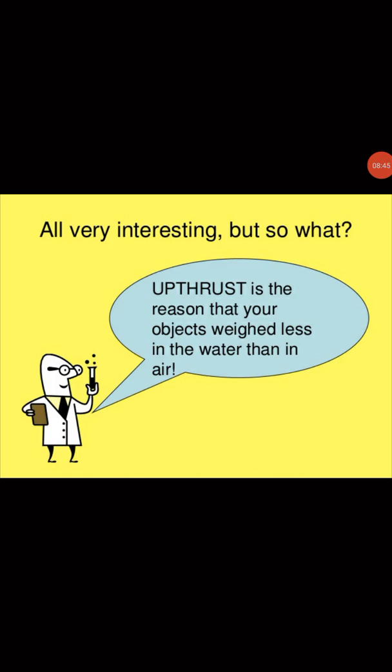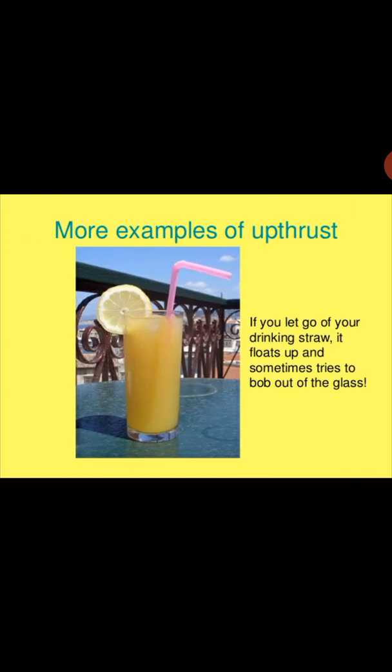The weight of objects in water is always less than in air. If an object is weighed in air and its weight is, say, 10 kg, when the same object is weighed in water the weight will be less than 10 kg. Why does this happen? Why does an object weigh less in water than in air? This is because of the up thrust force acting on the object.